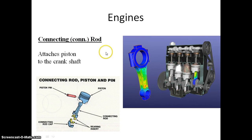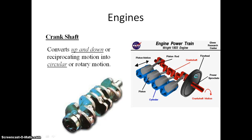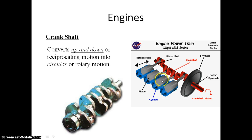The connecting rod is connected between the piston and the crankshaft. It works in between the piston and the crankshaft. The crankshaft — shown here in red — is where rotating motion occurs. This rotating motion is converted to rotary motion via the crankshaft.